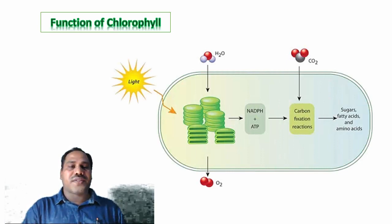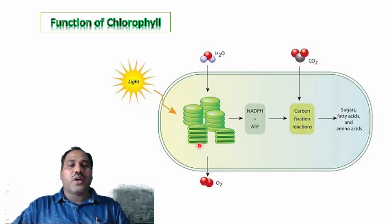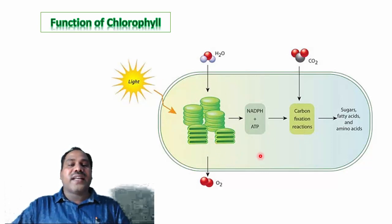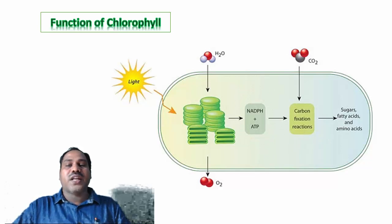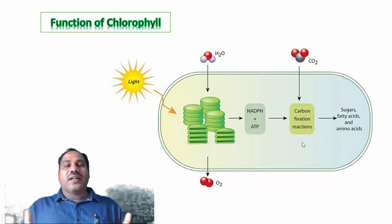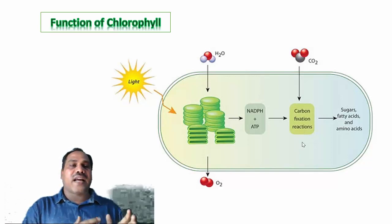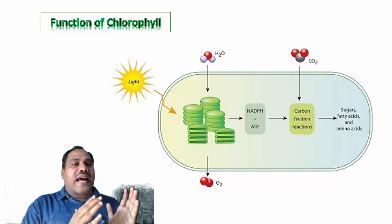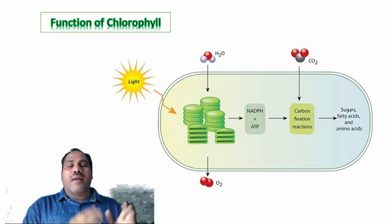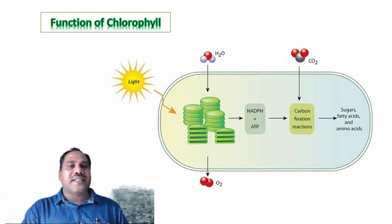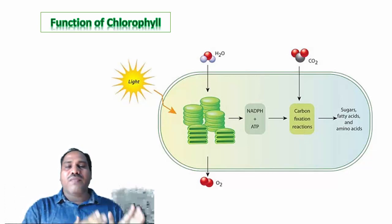The maximum absorbance of light takes place at 663 nanometers for chlorophyll a and 645 nanometers for chlorophyll b. During photosynthesis, when light energy falls on chlorophyll molecules, the chlorophyll converts light energy into chemical potential energy such as NADPH and ATP, which are then used in carbon fixation reactions to produce sugars.